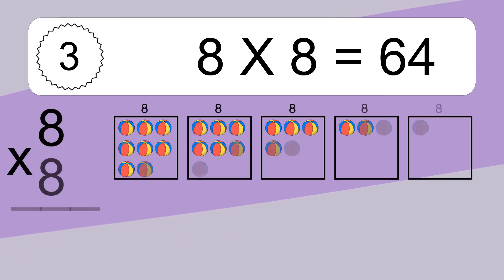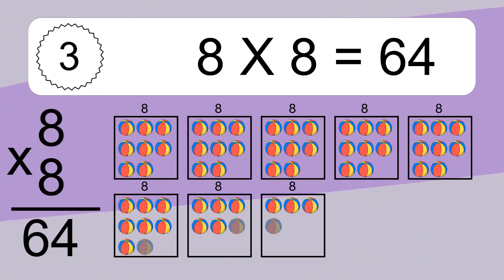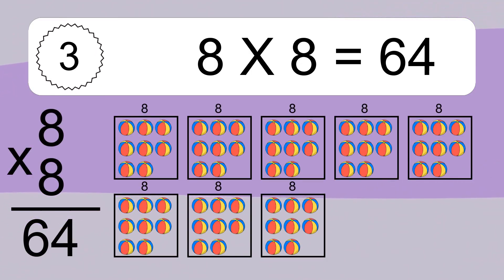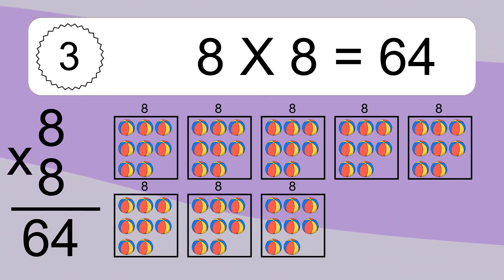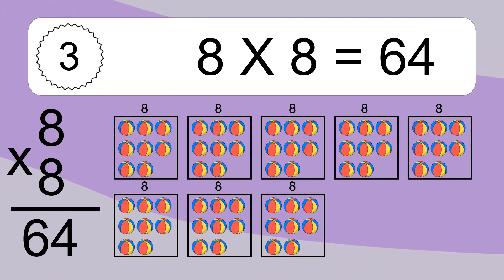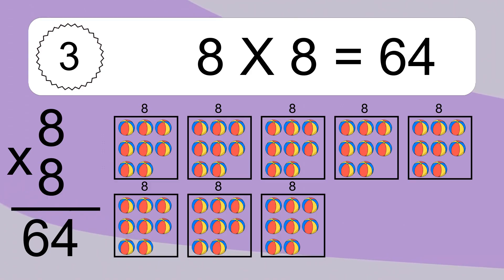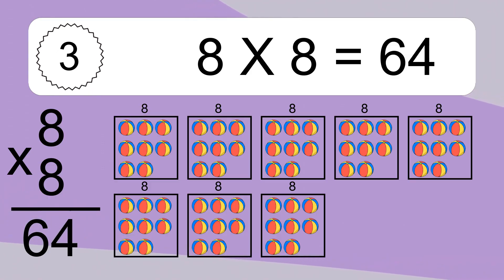Eight times eight equals what? Eight times eight equals 64. We have eight boxes, and each box has eight colorful balls inside. If you count all the balls in all the boxes together, you will have eight times eight balls. This equals 64 balls.